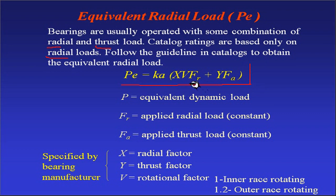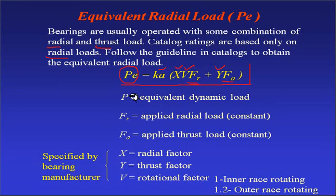There are some parameters used in the conversion. Fr is your radial force, Fa is your axial force. We use factors X and Y, along with a rotation factor V and an application factor Ka. Pe is defined as the equivalent dynamic radial load acting on the bearing, giving a combination of Fr and Fa. X and Y are the radial and thrust factors specified in the catalogs. Fr and Fa are the applied radial and thrust loads, both assumed constant.